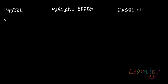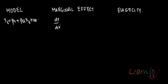You have the model yt = β1 + β2*xt + ut, and you want to find out the marginal effect of x on y. So you find dy/dx, which comes out to be just β2. And how do you find out elasticity? Elasticity is (dy/dx) * (x/y), which is basically β2 * (x/y).